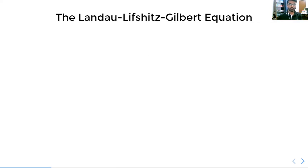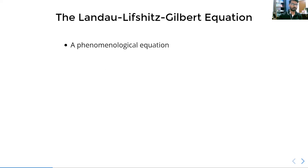The Landau-Lipschitz-Gilbert equation is a phenomenological equation. A phenomenological equation is one where we observe a phenomenon in the real world and then use an equation to describe it. For example, F = ma — we see an object, put force on it, it accelerates, so that is a phenomenological equation. But E = mc² is not a phenomenological equation because that equation was derived from other equations.